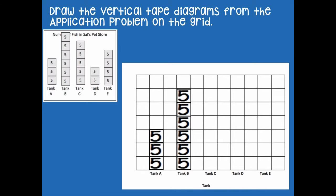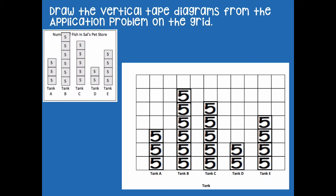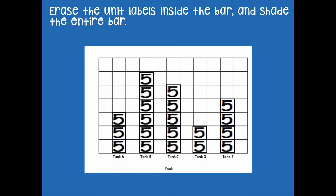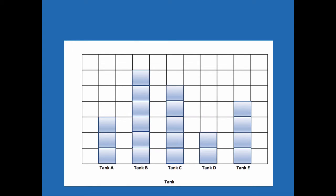I'm going to finish the rest of our bar graph — yours should look just like this. Now we're going to erase the unit labels inside the bar and shade in the entire bar. We're going to erase these fives and shade them in. You're welcome to color right over those fives instead of erasing — whatever you prefer. Go ahead and do that for all of the rest of your bars.